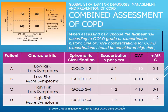This is the combined assessment, and it's a little bit putting the cart before the horse because I haven't talked about spirometry yet, other than to say if the FEV1/FVC ratio is less than 0.7, then we have obstructive disease. When you assess risk, you choose the highest risk according to the GOLD grade or exacerbation history. If someone has been hospitalized based on their COPD from a severe exacerbation, that plays a big impact on your overall score.